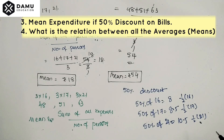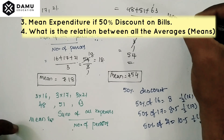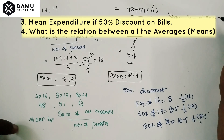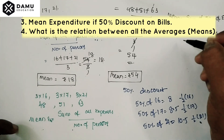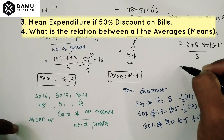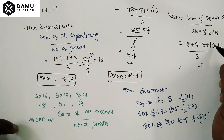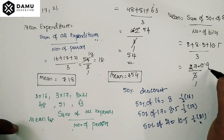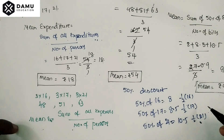After the 50% discount, we calculate the mean expenditure as the sum of the discounted expenses divided by the number of persons. That is 8 plus 8.5 plus 10.5, divided by 3, which gives 27 divided by 3. So the mean expenditure is now 9 rupees.